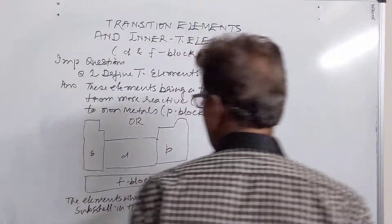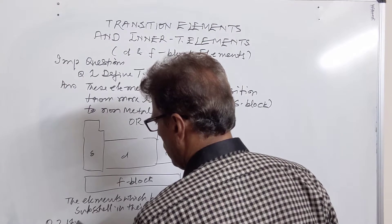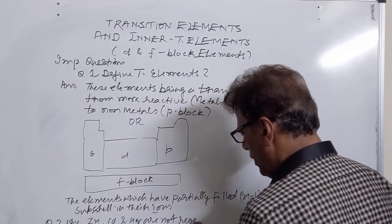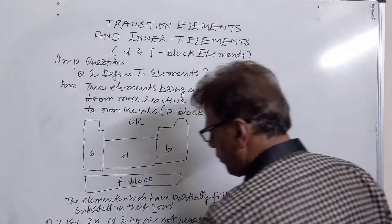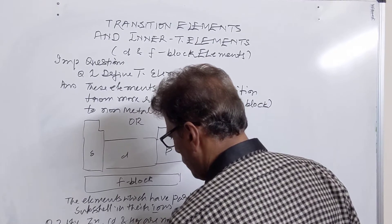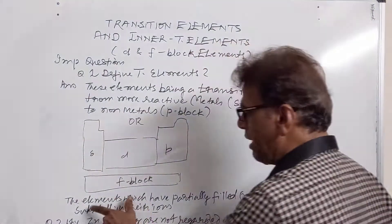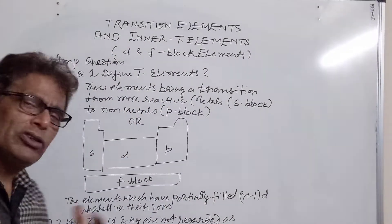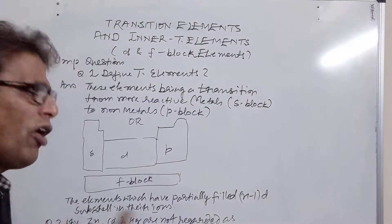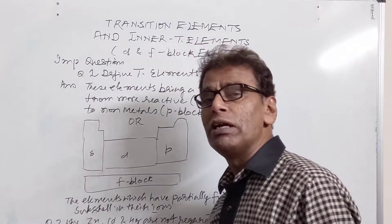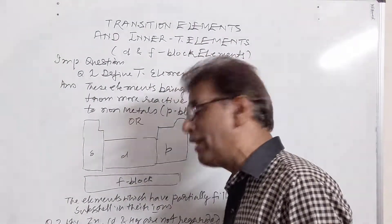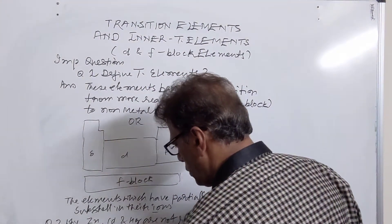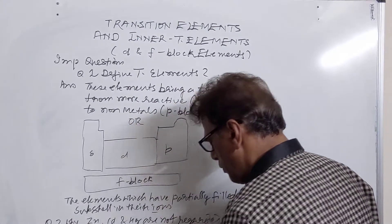A very important question: why are zinc, cadmium, and mercury — Zn, Cd, and Hg — not regarded as transition elements? According to the second definition, these elements must possess partially filled N minus 1 D orbitals in their ionic state. When we see Zn2+ ion, Cd2+ ion, and Hg2+ ion, they all have filled D sub-shells. Zn2+ has a filled 3D sub-shell, Cd2+ has a filled 4D sub-shell, and Hg2+ has a filled 5D sub-shell. So, due to filled D sub-shells in ionic state, that is the +2 state,